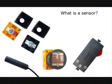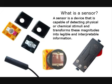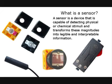First, we will explain some basic theory and key concepts that will aid us during this presentation. We will start with sensors. What is a sensor? A sensor is a device that is capable of detecting physical or chemical stimuli and transforms these magnitudes into legible and interpretable information. They allow a machine to be aware of its surroundings and interact with it. Just like we use our senses to interact with the environment, machines and robots use sensors for this task.